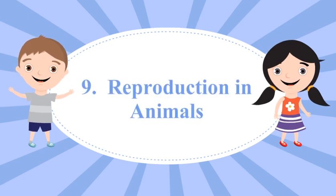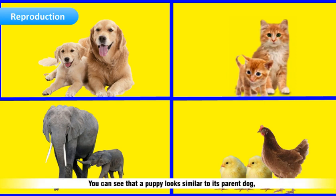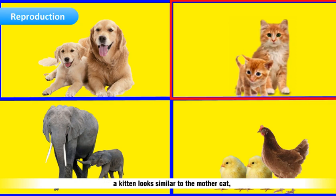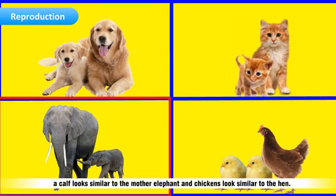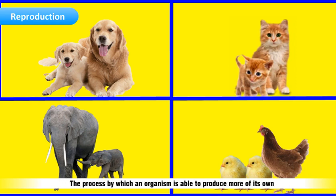A puppy looks similar to its parent dog, a kitten looks similar to the mother cat, a calf looks similar to the mother elephant, and chickens look similar to the hen. The process by which an organism is able to produce more of its own kind to maintain the continuity of species is known as reproduction.